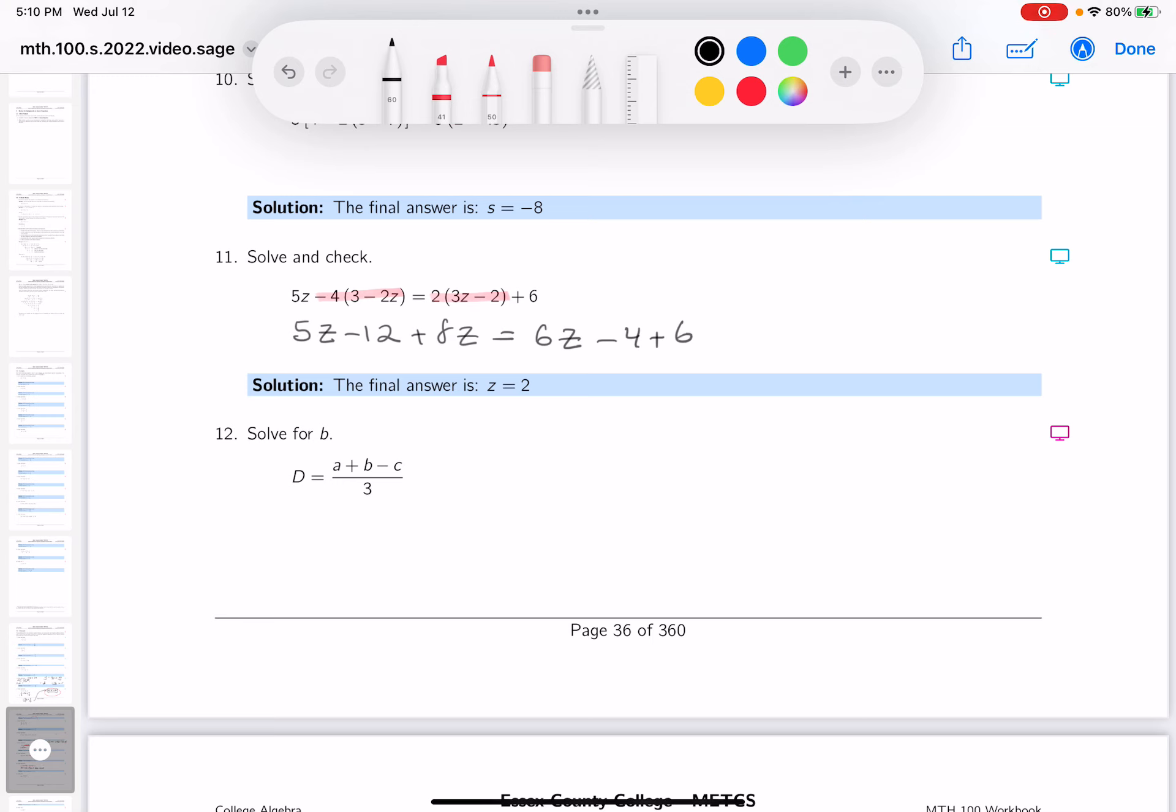Now what I'm going to do is simplify each side by combining like terms. 5z and 8z is 13z minus 12 equals... let's see, 6z and minus 4 plus 6 is plus 2.